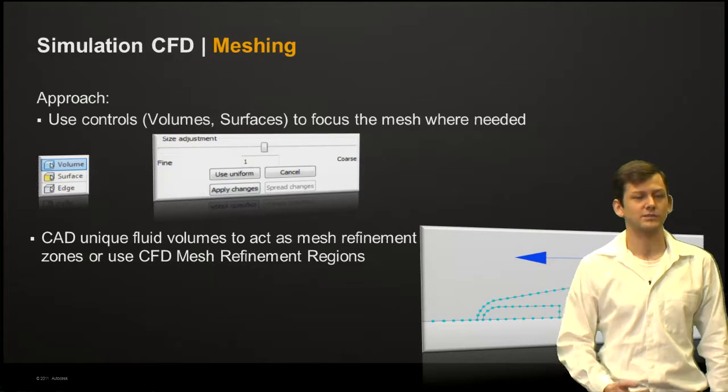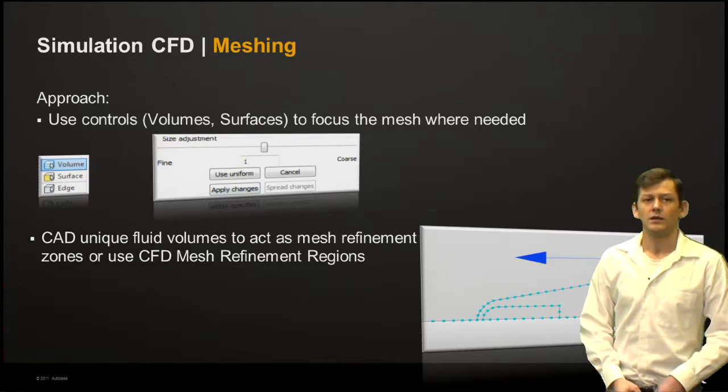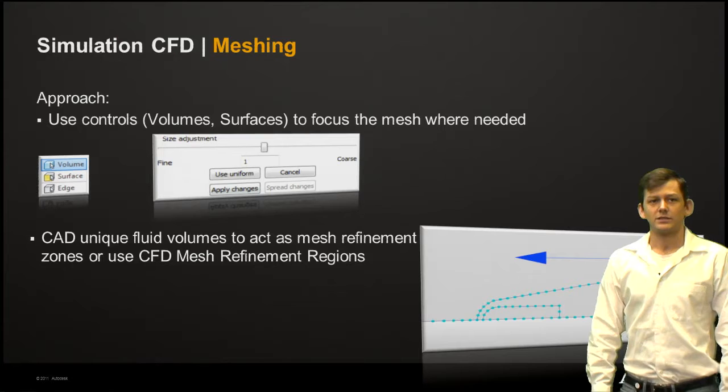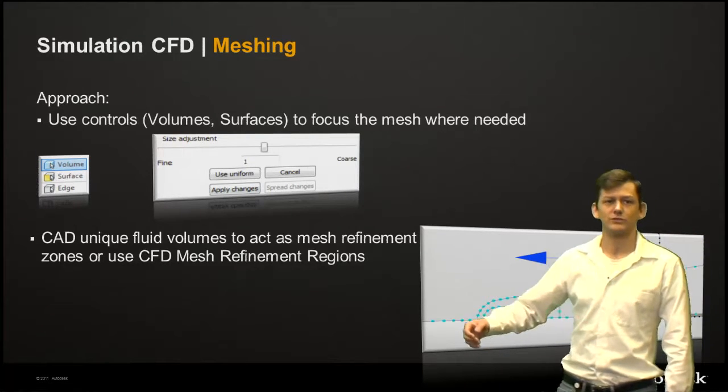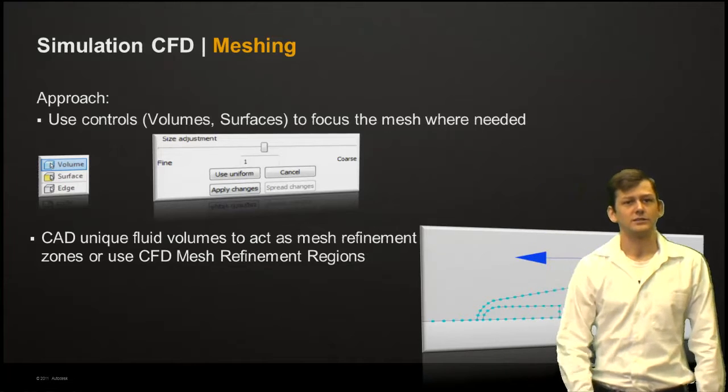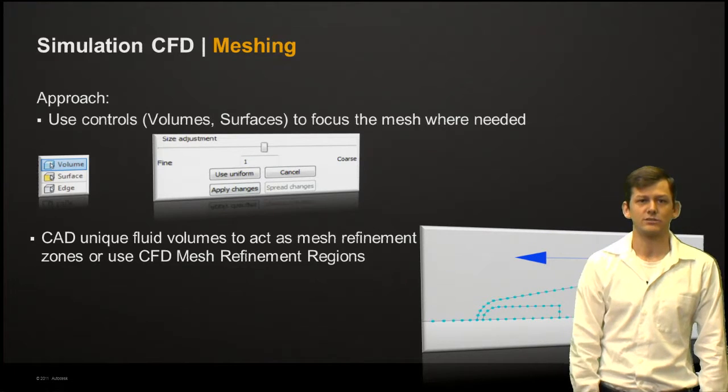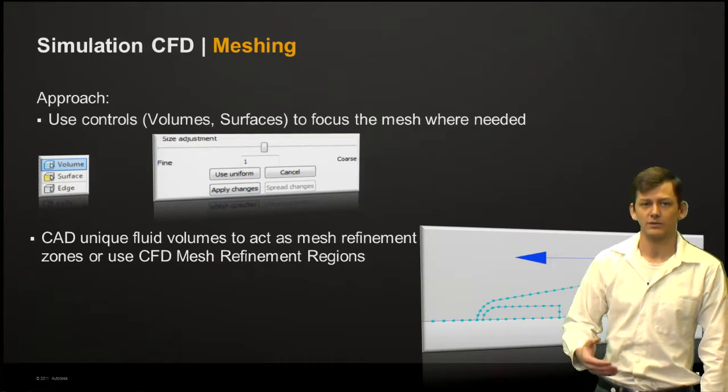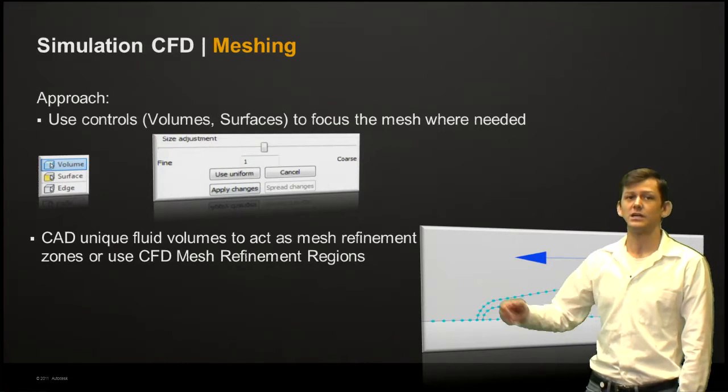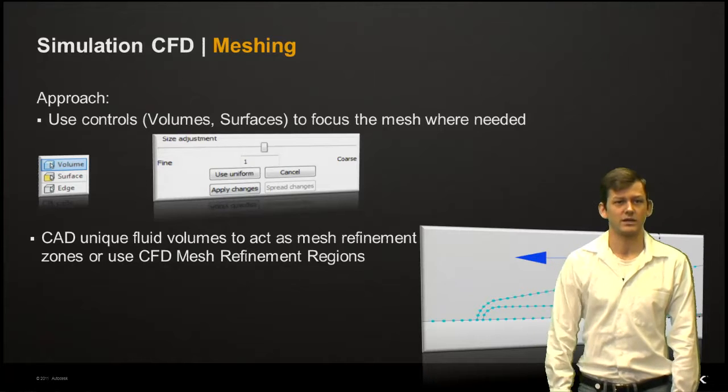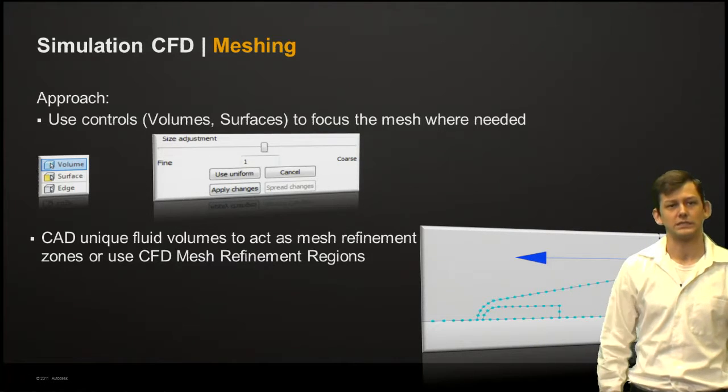If we wanted to actually refine those models to capture the mesh, how can we do that? We're going to use the controls. If you look at the top of your toolbar, there's a volume, surface, and even edge controls. Using that, we can pick volumes or we can pick specific surfaces in the area of interest and use the size adjustment slider and refine the mesh distribution on those entities.